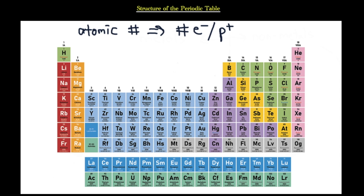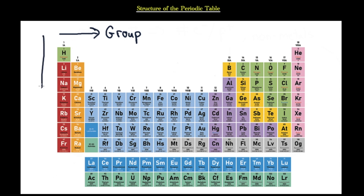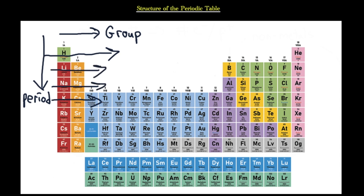These elements are largely split into different groups that will have very similar properties. A group is a vertical column — this would be the first group, the second group, the third group, the fourth group, and so on. Your periods are aligned horizontally — this is the first period, second period, third period, fourth period, and so on.